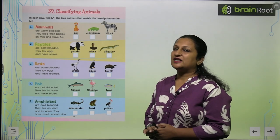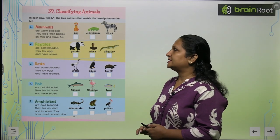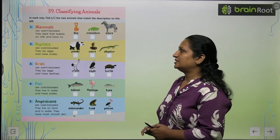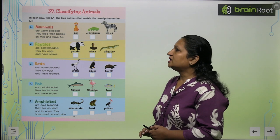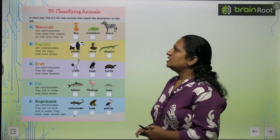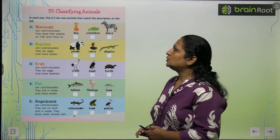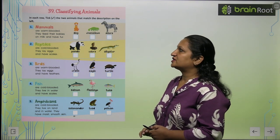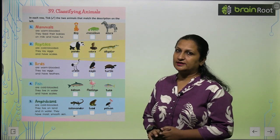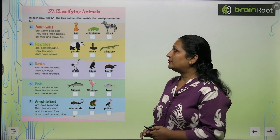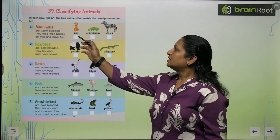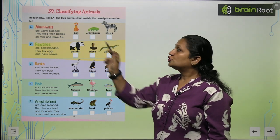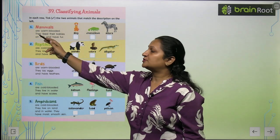Children, let's start with chapter number 39, that is classifying animals. In each row, tick the two animals that match the description on the left. So we have three organisms here which will match our description.